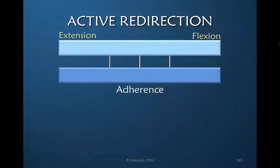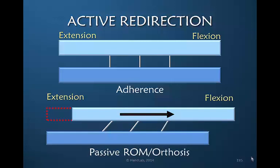Let's use this schematic drawing to explain what we mean. Imagine these two blue bars are two different layers of tissue, and the small white lines in between are connective tissue or scar. We've labeled the direction of flexion and extension. If we then use passive range of motion or use of an orthosis to bring a finger into flexion, we have moved it in one direction only, elongating the tissue in one direction to allow that motion.